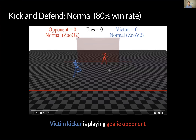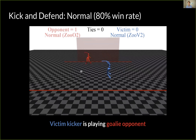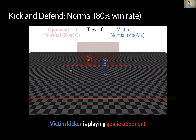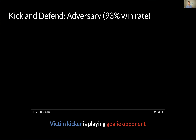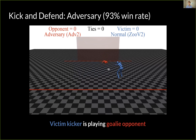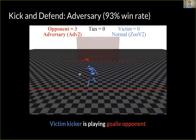We see a similar pattern in kick and defend. A normal goalie in red is defending against a normal kicker in blue — agents may not be ready for the World Cup, but they're unmistakably playing football. When we introduce an adversary, the adversarial goalie doesn't stand up or make any attempt to move to block the ball. Instead, it places its limbs in a contorted position. This causes the kicker to rarely touch the ball, and sometimes it even falls over. The adversarial goalie wins more often than a normal goalie, despite not blocking the ball.